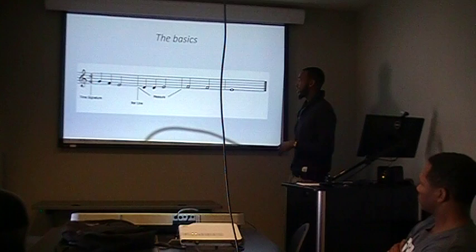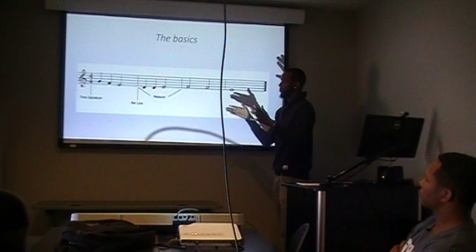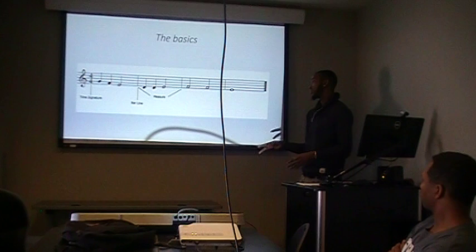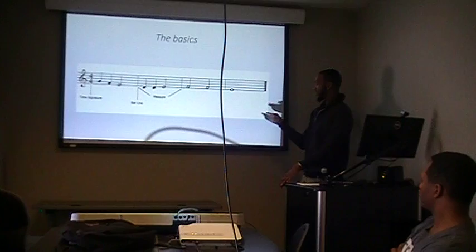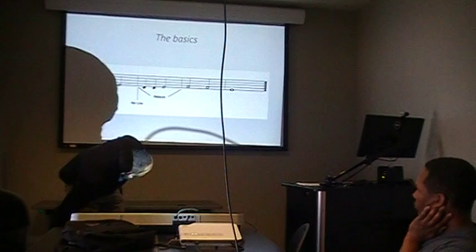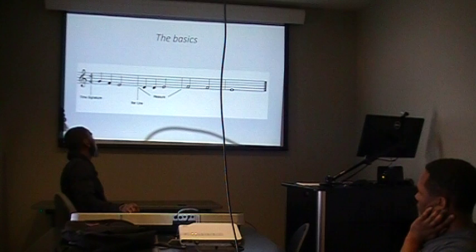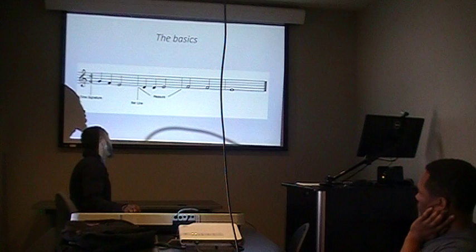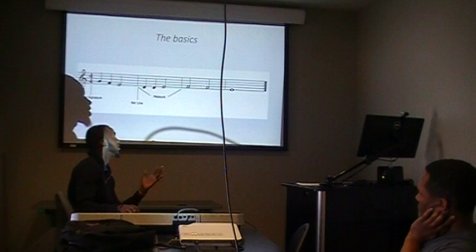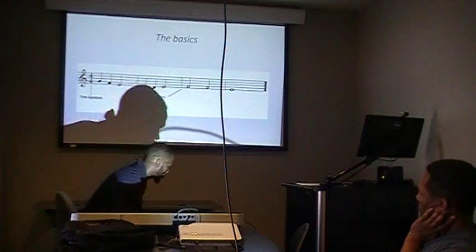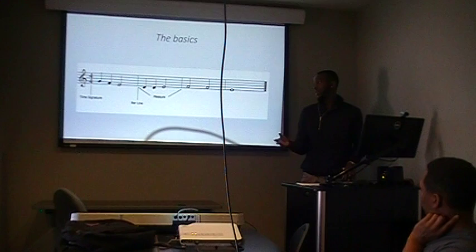A measure is separated by a bar line. As I said, there's four beats per measure. In the first measure, there are two quarter notes — one beat each — and then a half note, which is two beats, so that equals four beats per measure. The second measure is the same. The third one has two half notes. And the fourth one is a whole note. For example, the first measure sounds like one, two, three, four. The third measure with two half notes is one, two, three, four. The whole note you hold down for four beats — one, two, three, four.